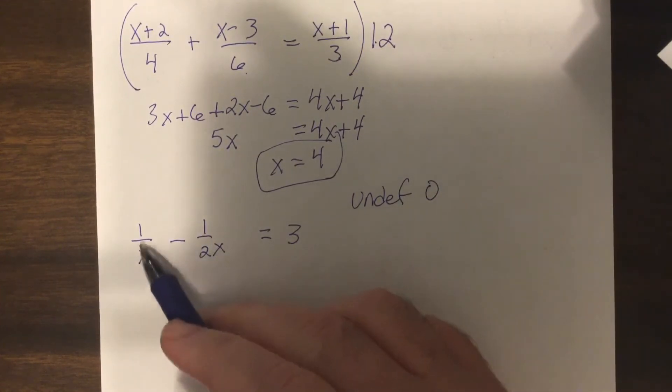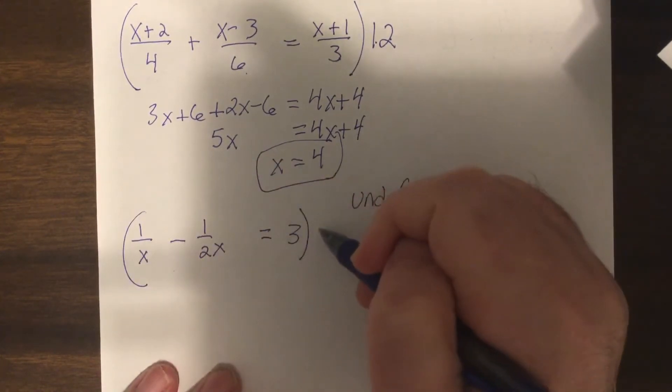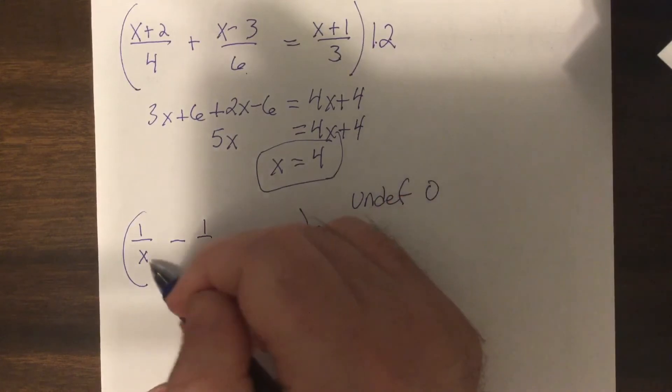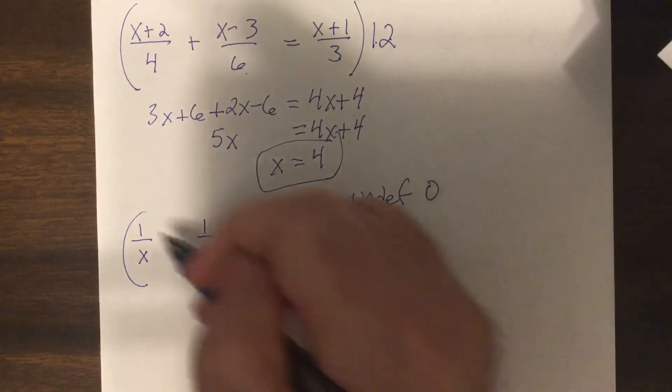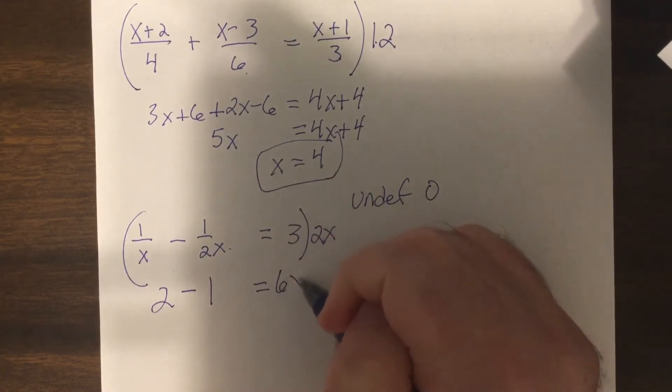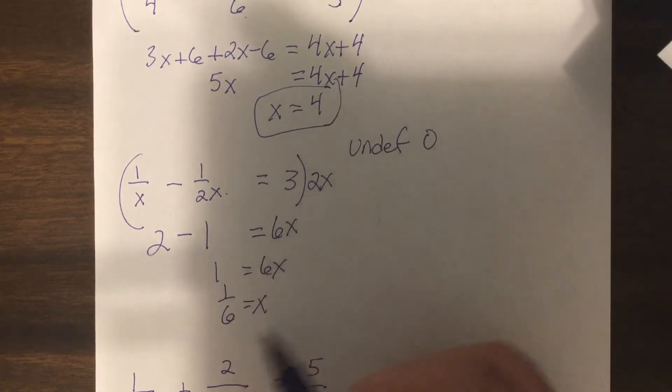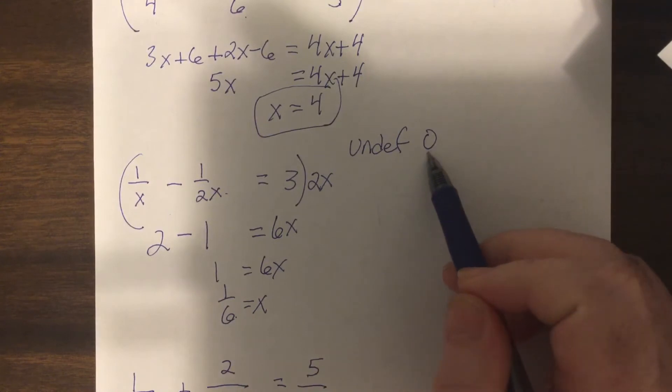So the undefined would be zero. I cannot have zero as an answer for this problem because if you had zero in the denominator it causes it to be zero. But I'm going to multiply everything by 2x, so this would be 2 minus 1 equals 6x. So 1 equals 6x, x equals 1/6. And that's okay to have as an answer because it's not the undefined which is zero.